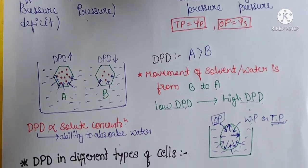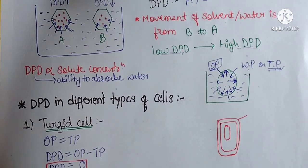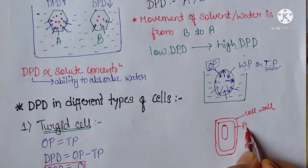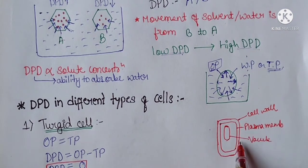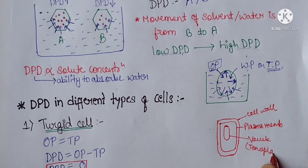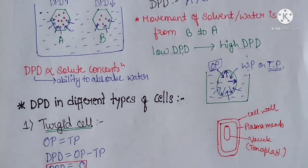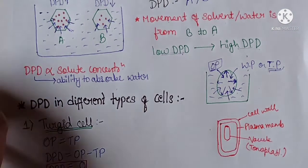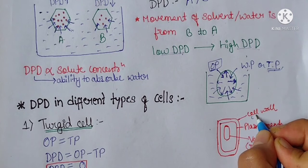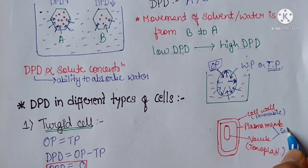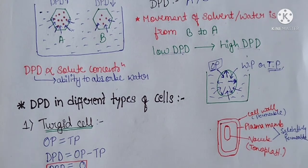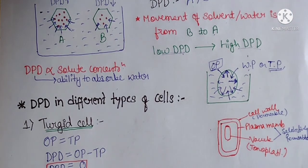Now we have a typical cell structure. This is the cell wall. This is the plasma membrane. This inner membrane is called the tonoplast. In a typical cell structure, the cell membrane is permeable, while the plasma membrane and the tonoplast around the vacuole are selectively permeable and semi-permeable.